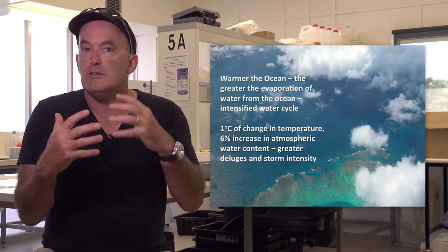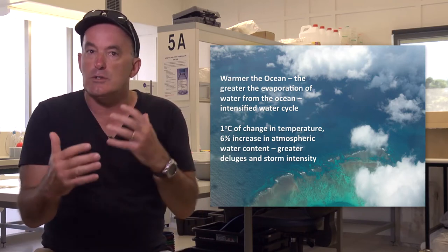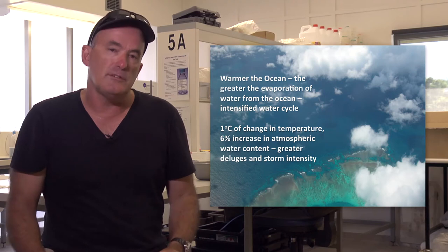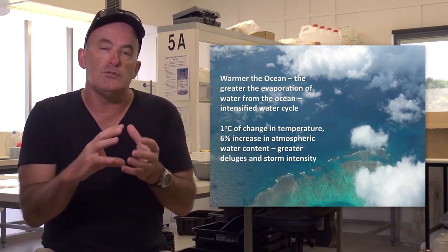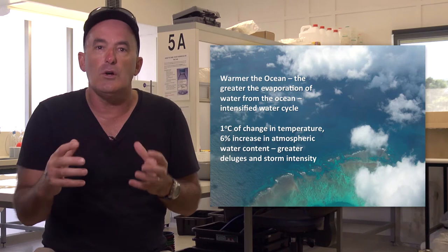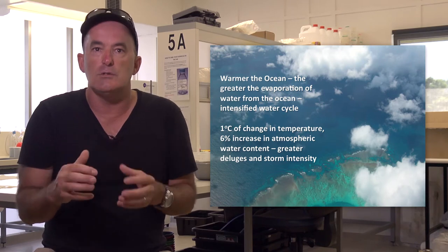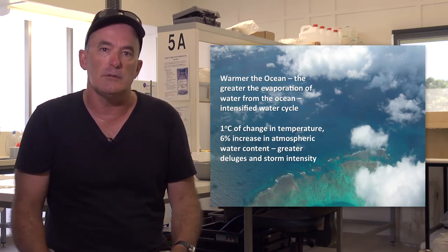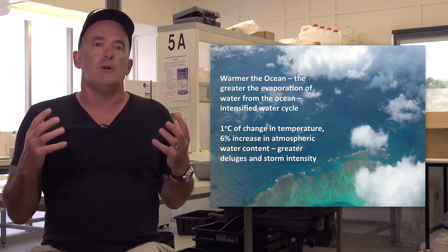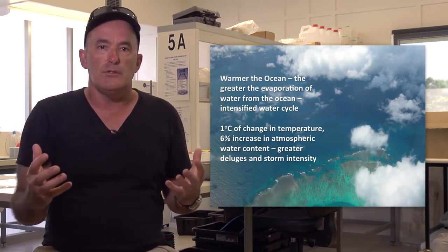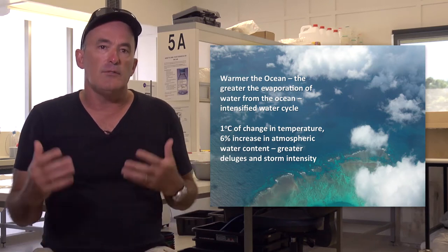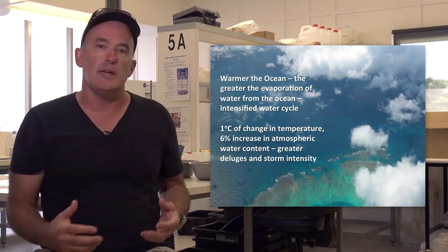The second change is that changes to ocean temperature are driving more intense storm systems. This contrasts with the fact that some regions are experiencing longer droughts due to climate-related influences. While there is some discussion about whether or not the frequency of storms is changing, there is very strong evidence that the average storm is becoming more intense.